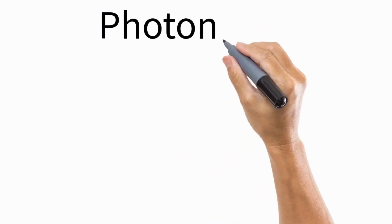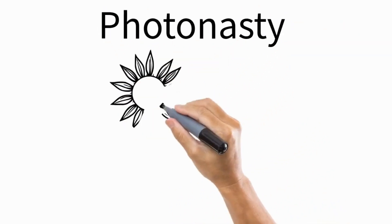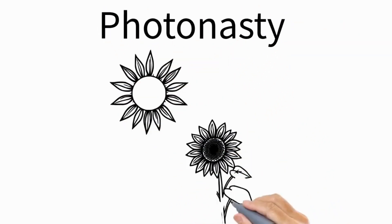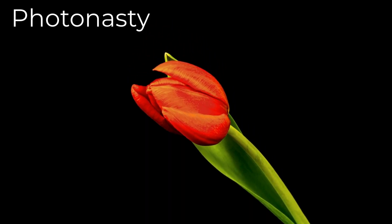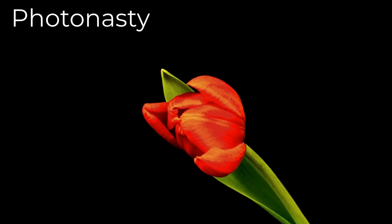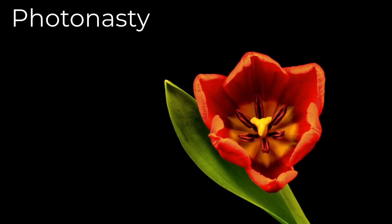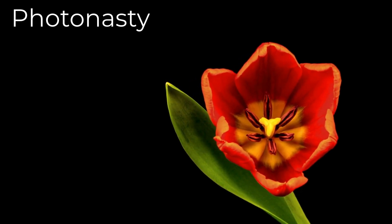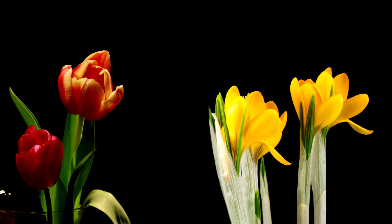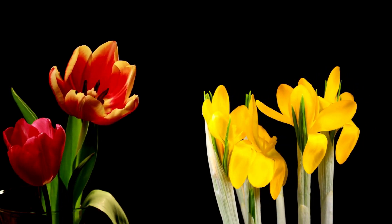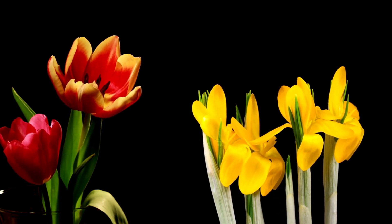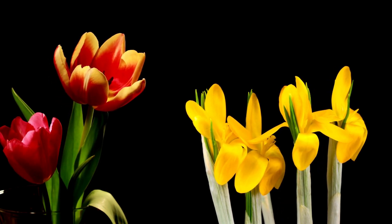Another example is the Venus flytrap, which snaps shut when its sensitive trigger hairs are stimulated, effectively capturing its prey. Photonasty is a type of nastic movement triggered by changes in light intensity, regardless of the direction the light comes from. It is commonly observed in flowers that open and close in response to the presence or absence of light — for example, tulip and crocus flowers open their petals during daylight and close them at night or on cloudy days.